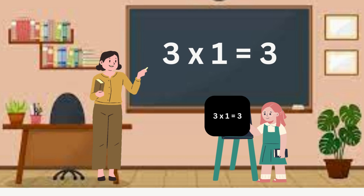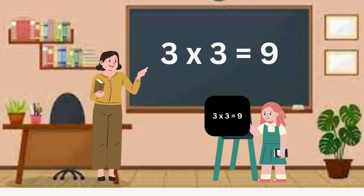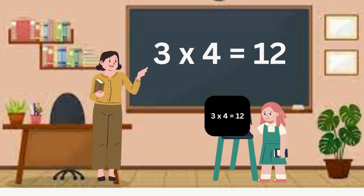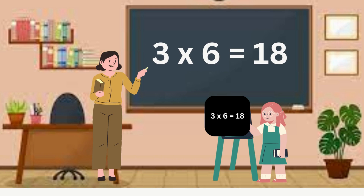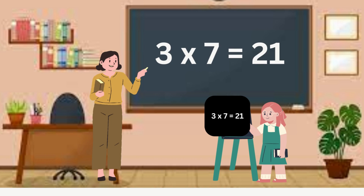Three. Three ones are three. Three twos are six. Three threes are nine. Three fours are twelve. Three fives are fifteen. Three sixes are eighteen. Three sevens are twenty-one.